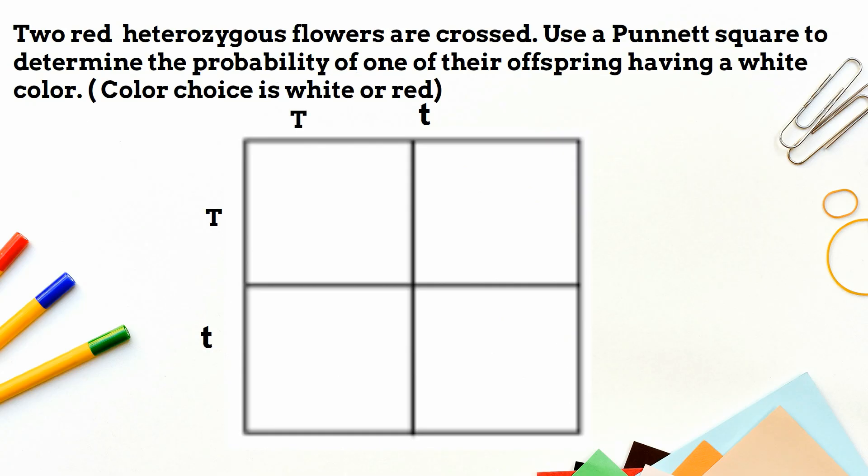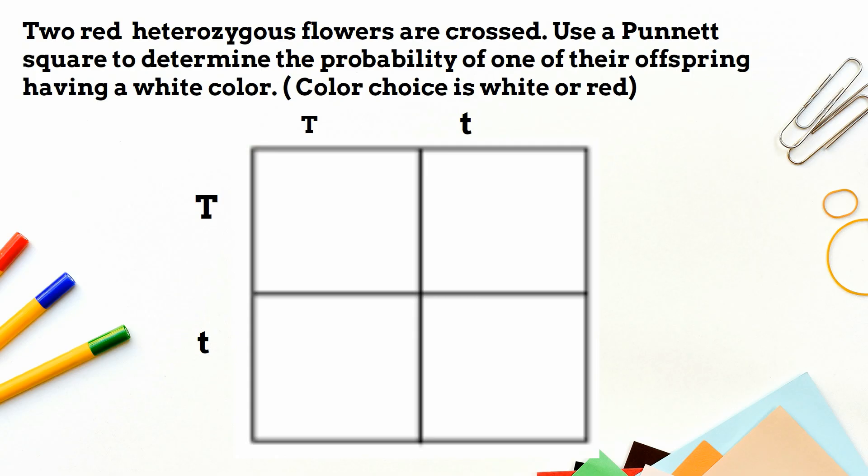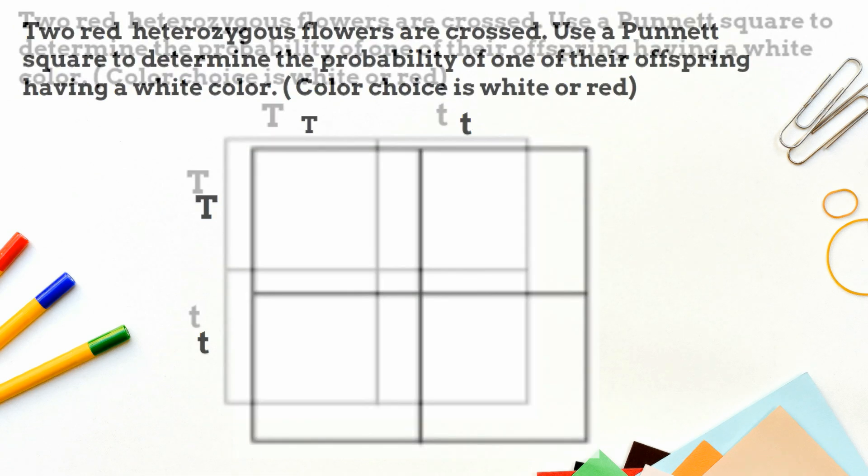Remember a heterozygous genotype is always a dominant trait. So both parents are written big T, little t, because they are heterozygous. Next, I will fill in the boxes.